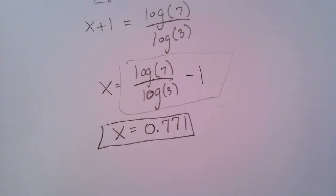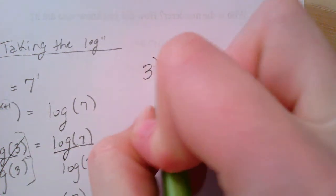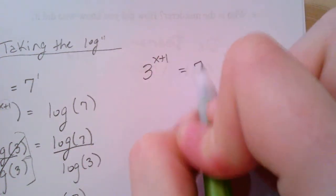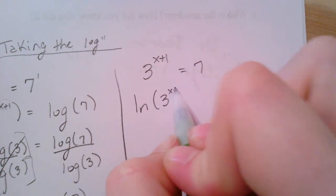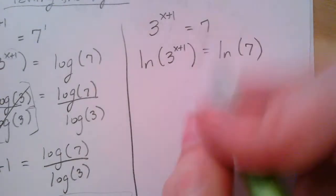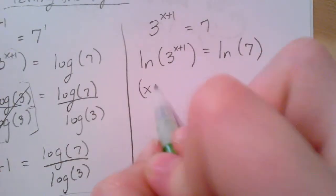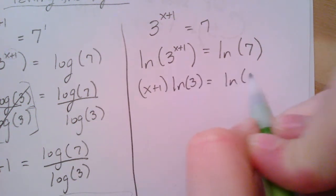So you might be wondering, if any base really works, could we do the same problem again using natural logs? Well, let's try it out. So I'm going to do the same problem. 3^(x+1) equals seven. This time, I'm going to compare using natural logs. Remember, this has a base of E, which is very different than 10. And hopefully by the end, you'll be very convinced that you could use any base and still get the same answer, and essentially just skip that whole change of base step at the end, which is so cumbersome.